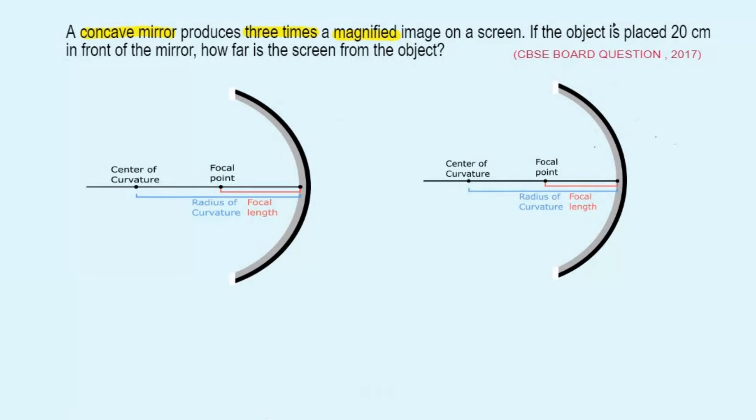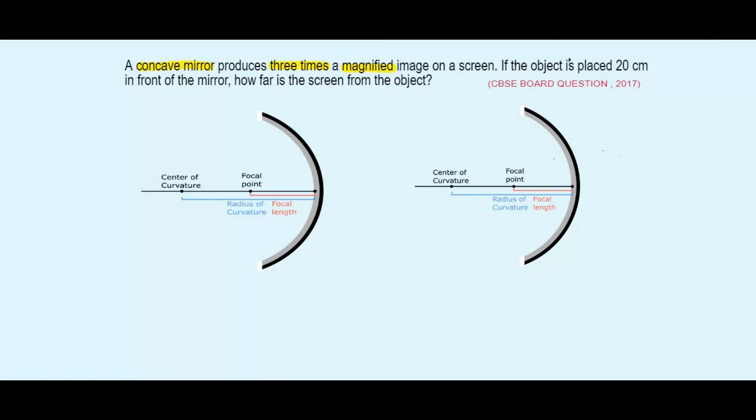So now let's have a look at the conditions where a concave mirror produces a magnified image. So here we have two concave mirrors and now we'll see how a magnified image is produced in each of these cases.